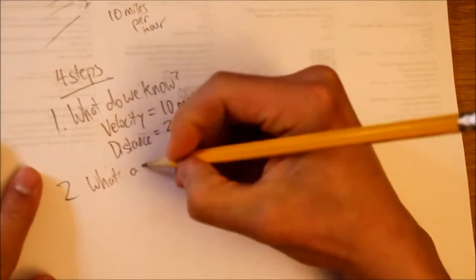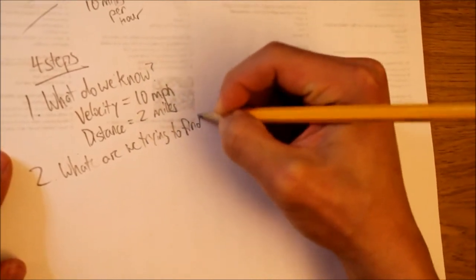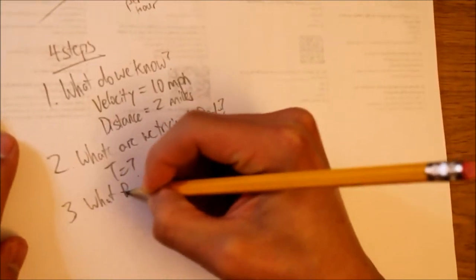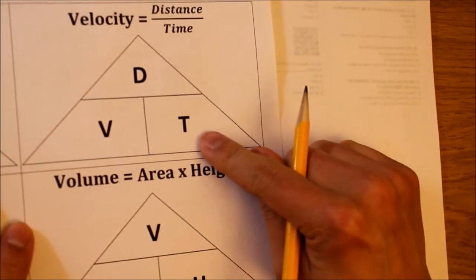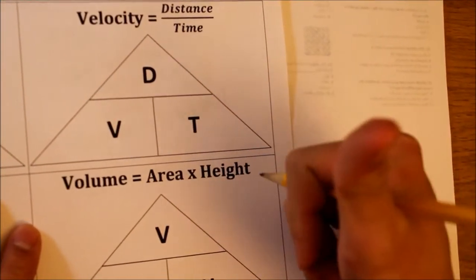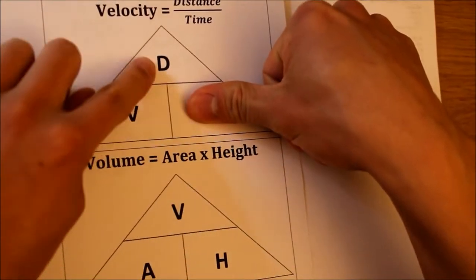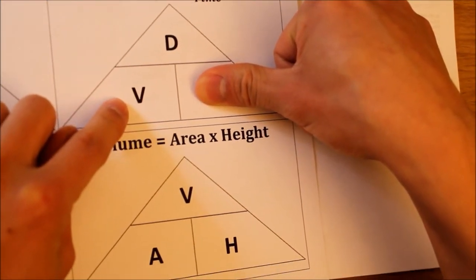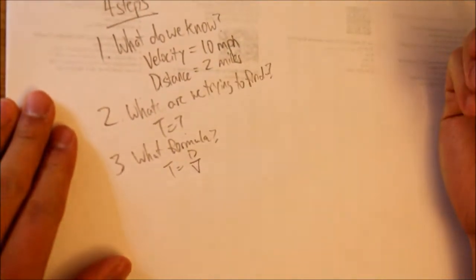Step two: what are we trying to find? We want to know how long the trip to the store will take, so we want to find time, t. Step three: what formula will we use? We will use our magic triangle. Because we are trying to solve for time, we use our thumb to cover up the t, which stands for time. That leaves us with d divided by v — distance divided by velocity — so our formula is: time equals distance divided by velocity.